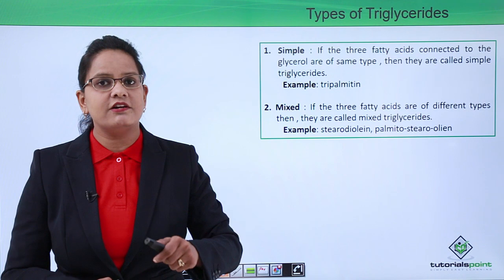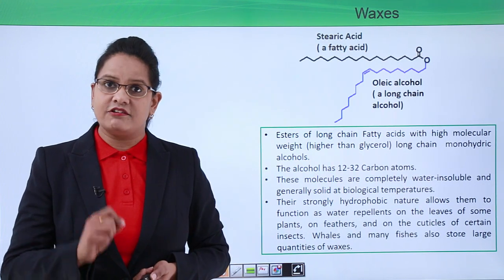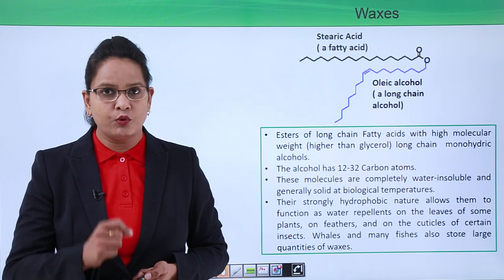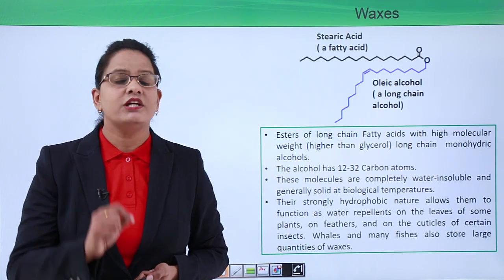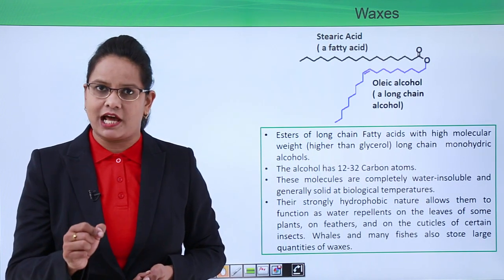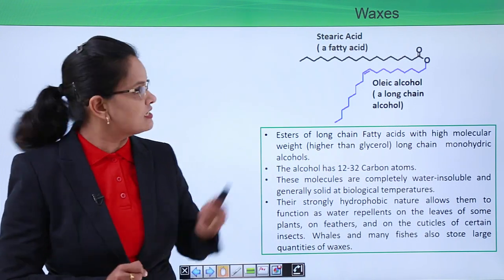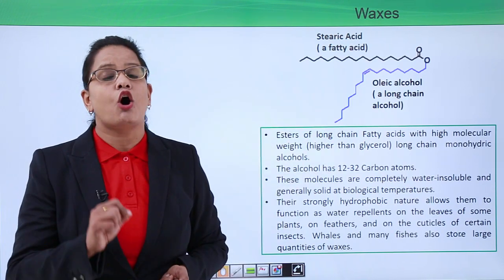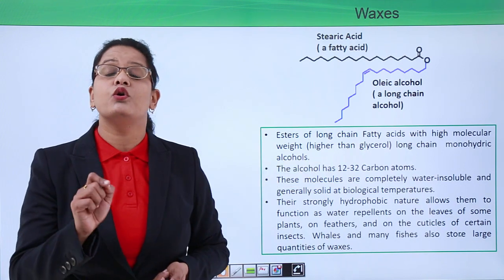Now the next type of simple lipids is waxes. What is the difference? The difference is basically on the basis of alcohol. The type of alcohol group or how many alcohol groups are present decides what simple lipid it is. In wax, we don't have glycerol which has three OH groups. We have a simple aliphatic alcohol which has around 12 to 32 carbons linked with a single fatty acid. They are esters of long chain fatty acids with long chain monohydric alcohols.